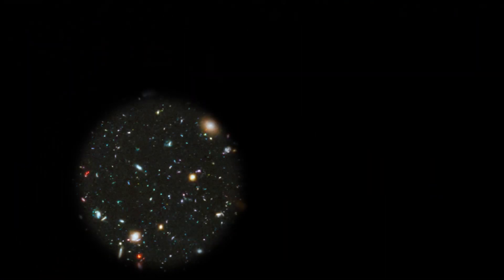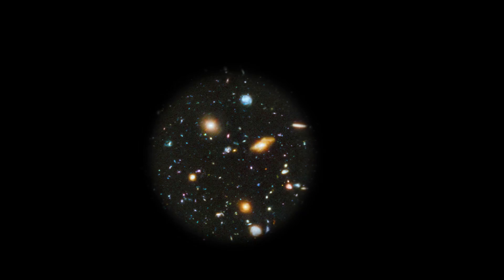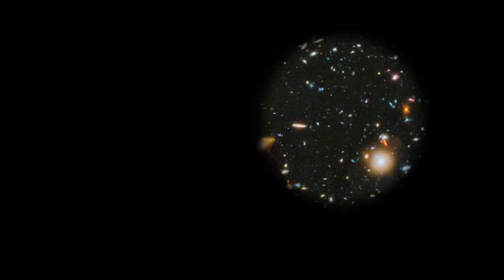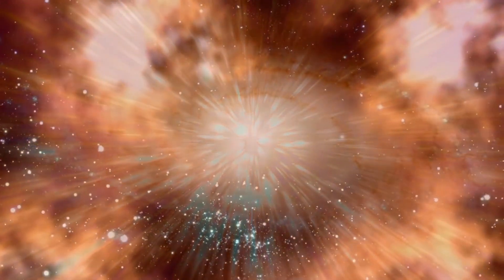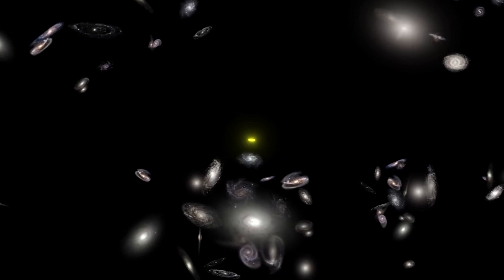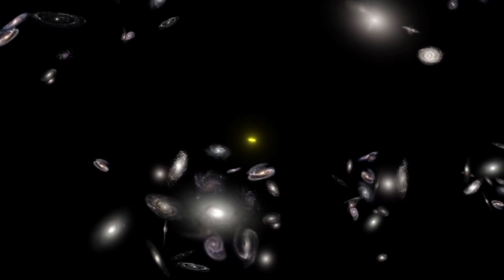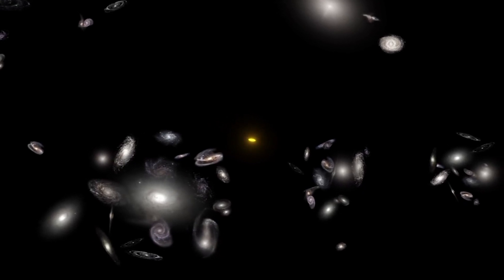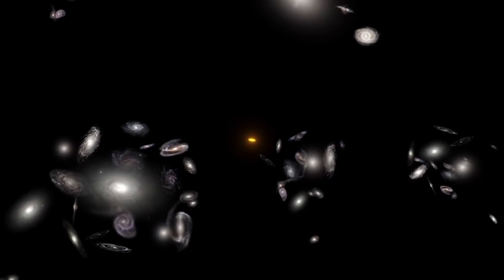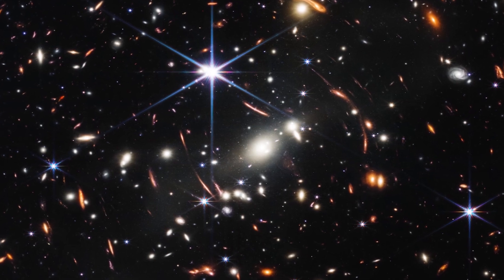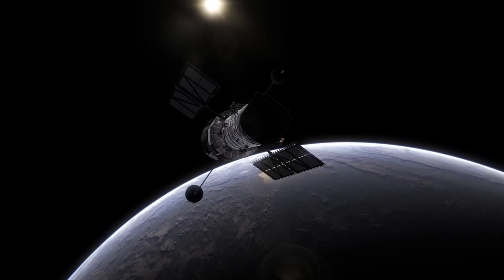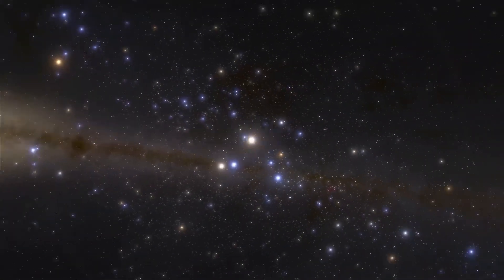The striking images captured by the James Webb Telescope have challenged our understanding of the origins of the universe. Specifically, these images directly contradict the Big Bang Hypothesis, which has long been considered an unquestioned truth by most cosmology theorists. The galaxies captured in these images appear to be too small, smooth, old, and numerous compared to the predictions of the Big Bang Hypothesis. The fact that the observed galaxies are two to three times smaller than similar galaxies imaged by the Hubble Space Telescope completely defies the expected behavior in an expanding universe.